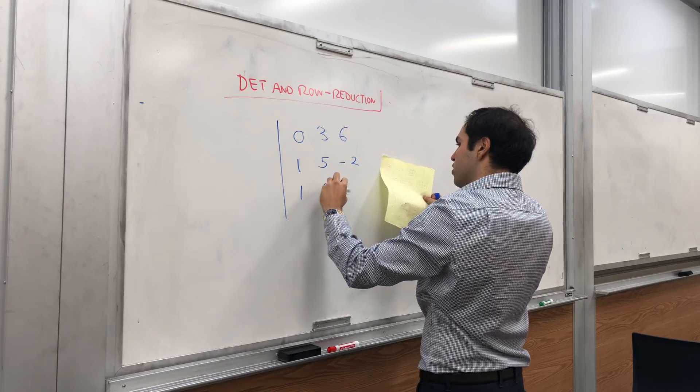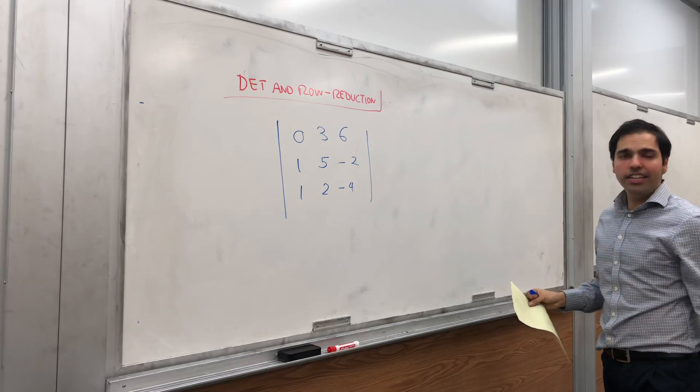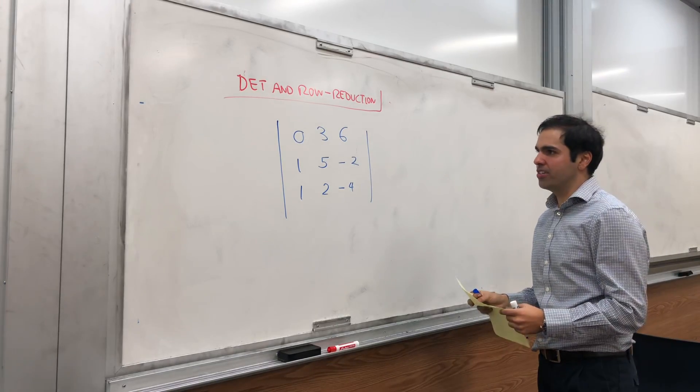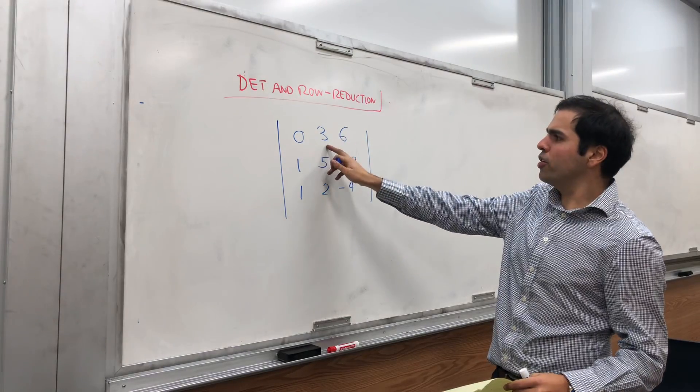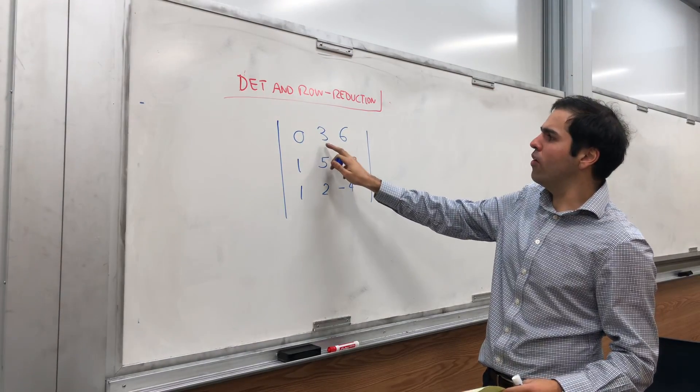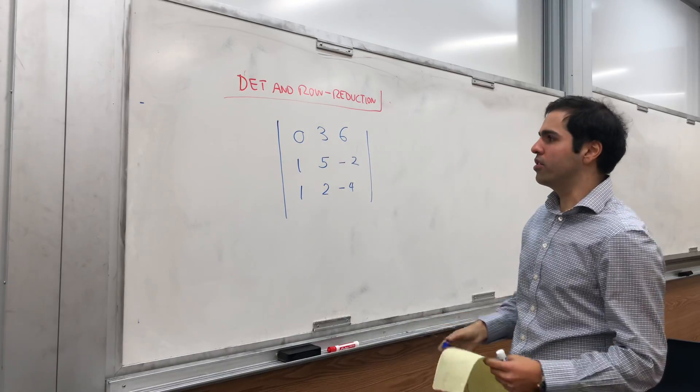And I want to show you the effect of each elementary row operation. So first of all, let me show you what happens if you multiply a row by a certain number.